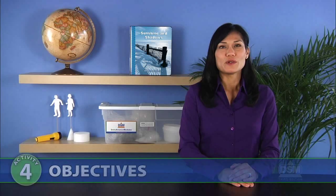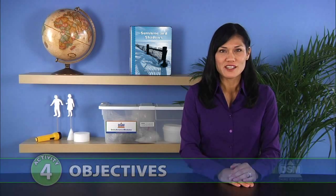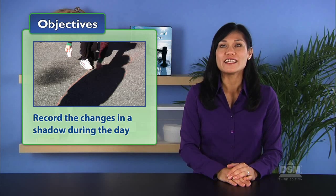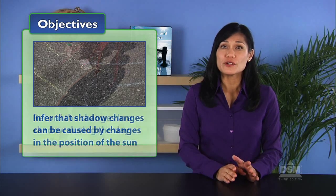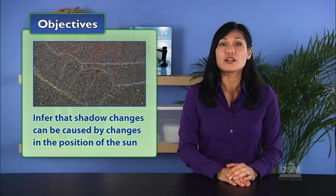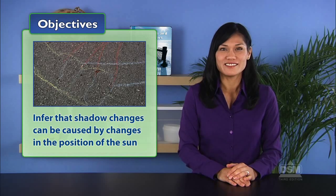In Activity 4, Shadows Change Places, students go outside and observe that shadows change over time. They first record the changes in a shadow during the day and then infer that some shadow changes are caused by changes in the position of the sun.